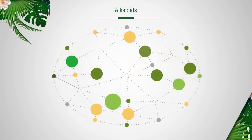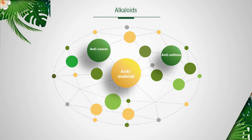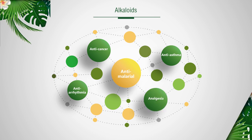Alkaloids are a class of naturally occurring organic compounds that contain predominantly basic nitrogen atoms. Alkaloids are produced by a variety of organisms, including bacteria, fungi, plants and animals. Alkaloids have a wide range of pharmacological activities, including antimalarial, anti-asthma, anti-cancer, anti-arrhythmia, analgesia, antibacterial and the like. Many have found use in traditional or modern medicine, or as a starting point for drug discovery. Other alkaloids have psychotropic and stimulant activity.